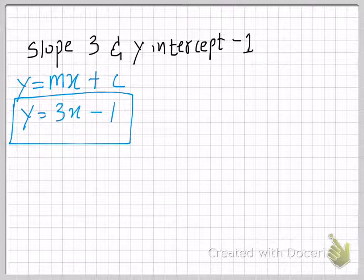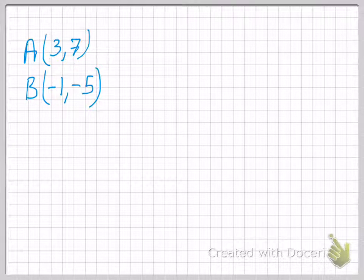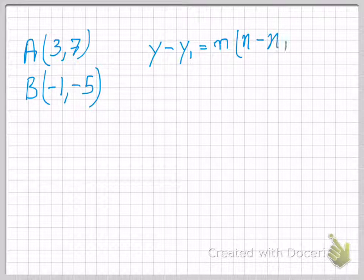However, if I give you two points through which the line is passing, then the equation will be calculated. Then it's a two-step process. Then the equation will be calculated using y minus y1 equals m times x minus x1. This is basically called the point-slope method.